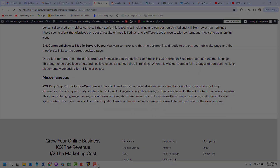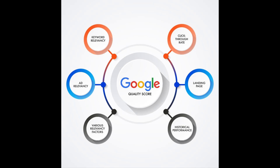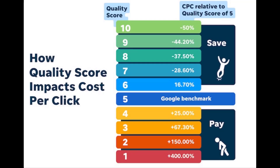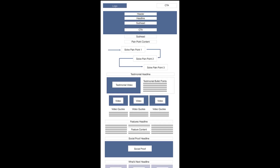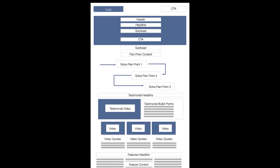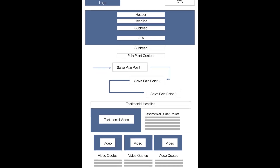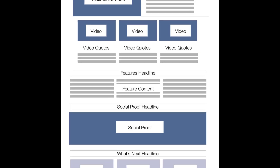Advertising platforms use a similar SEO algorithm to determine your quality score — an arbitrary score given to each page based on how it relates to the keyword. This helps advertising platforms keep irrelevant information off certain searches, but it also allows them to artificially inflate the price of a click. The code structure for this type of page is similar to the SEO structure, with a few major differences.